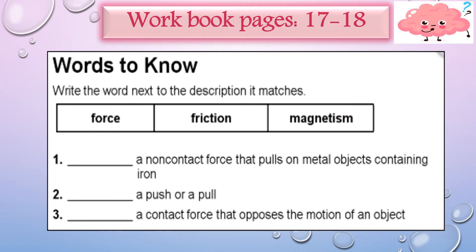Now we will do the homework in the workbook, pages 17 and 18 for the previous lesson. Words to know — write the word next to the description it matches. Number one: a non-contact force that pulls metal objects containing iron — the answer is magnetism. Number two: a push or pull — its force. Number three: a contact force that opposes the motion of an object — friction.